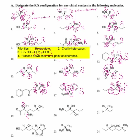Number twenty: starting with the first asymmetric center, oxygen (the OH) is number one, and hydrogen is number four. We have two carbons with heteroatoms — one has an oxygen and one has a nitrogen. Because oxygen is heavier than nitrogen, that side is CIP priority number two, and the nitrogen side is CIP priority number three. We rotate clockwise, so that makes this an R configuration.